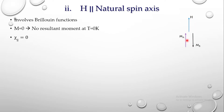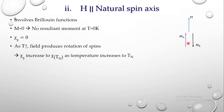As the temperature increases, the spin alignment is disturbed, so a slight disturbance is created and the field will be able to produce rotation of the spins. Rotation of the spins means a small magnetization is created, and due to this small magnetization a small amount of susceptibility is produced. Therefore χ∥ increases from zero to χ(Tn) as temperature increases from zero to Tn.